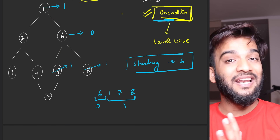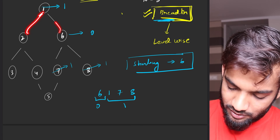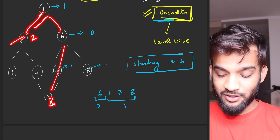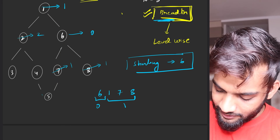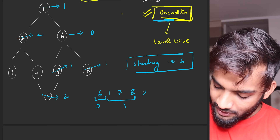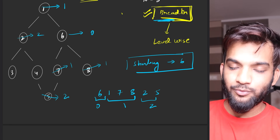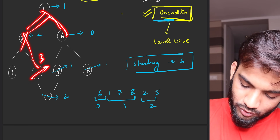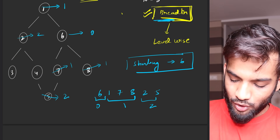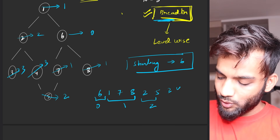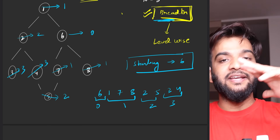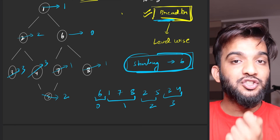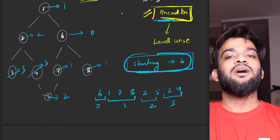Continuing with starting node six: nodes two and five are at level two. Then nodes three and four are at level three. The traversal is always breadth-wise, and everything depends on the starting node — changing the starting node changes the entire traversal order. You always travel in the breadth-wise manner.